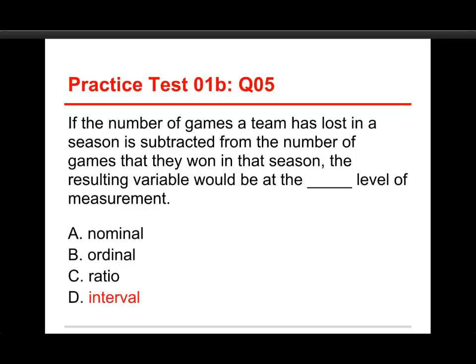The answer is D, interval. The difference between wins and losses is a number that can be positive or negative — positive if they won more, negative if they lost more. So you have a zero, but it's an arbitrary one; you can go above or below it. On the other hand, a one-game move is the same unit all the way through, and that consistent unit is what makes it interval. It's a little hard to come up with real-life interval examples, but this is one possibility.